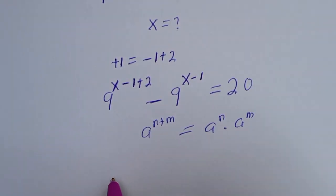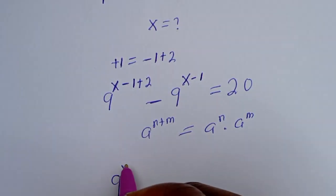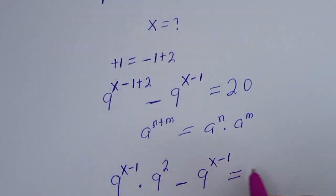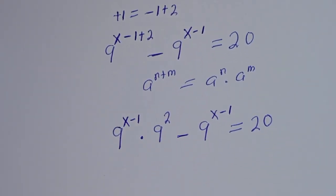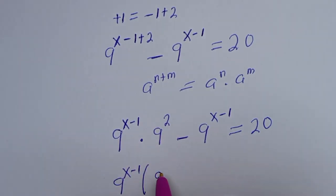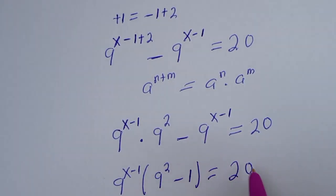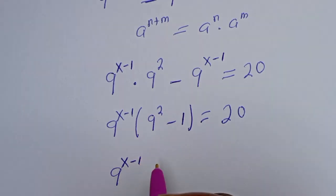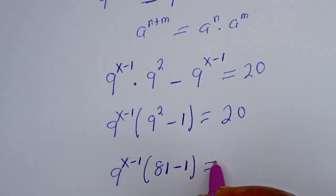Then this can be written as 9 to the power of x minus 1, multiplied by 9 squared, minus 9 to the power of x minus 1, is equal to 20. At this point, 9 to the power of x minus 1 is common — let's bring it out. We have 9 to the power of x minus 1, bracket: 9 squared, which is 81, minus 1, is equal to 20.